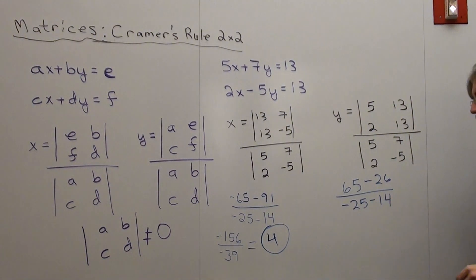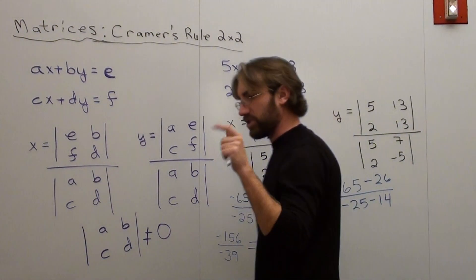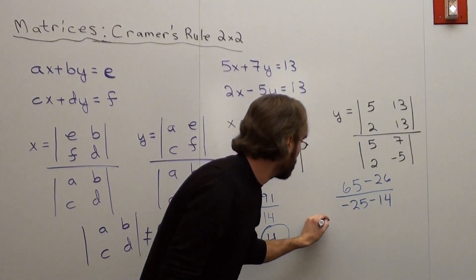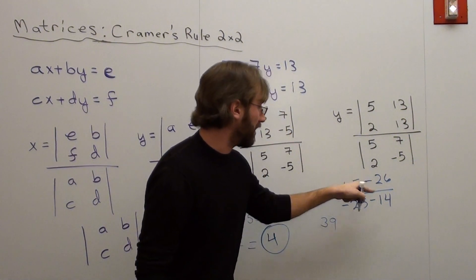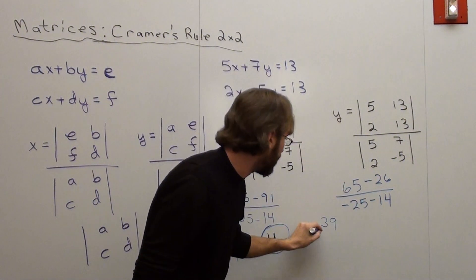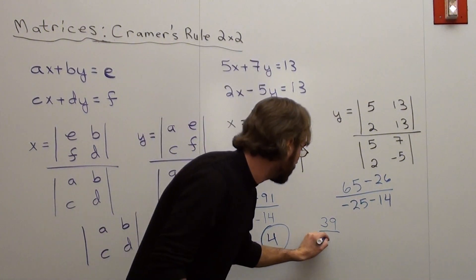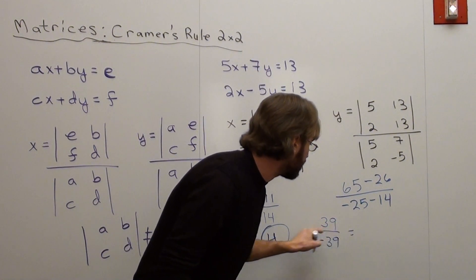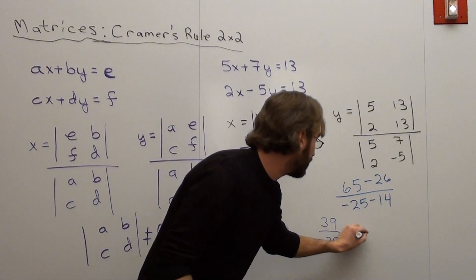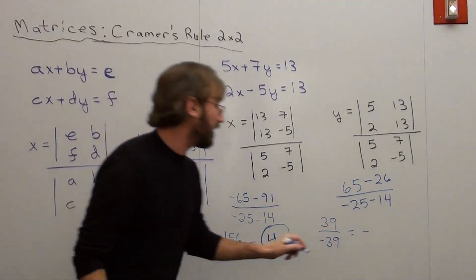And this one is 65 minus 26, which is 45, which is 39. Let me double check that. 39. Negative 25 subtracted by 14 is negative 39. Positive divided by negative is negative. 39 divided by 39 is 1.